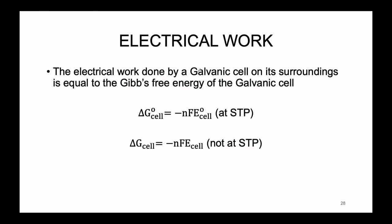Last Friday we introduced the galvanic cell, where the standard energy of the cell was stated to be positive if there was a spontaneous reaction occurring — which by definition galvanic cells always have. How can we translate this into the language of Gibbs free energy? The electrical work done by a galvanic cell on its surroundings, as electrons leave the reaction and move into a device, is equal to the Gibbs free energy of the galvanic cell.